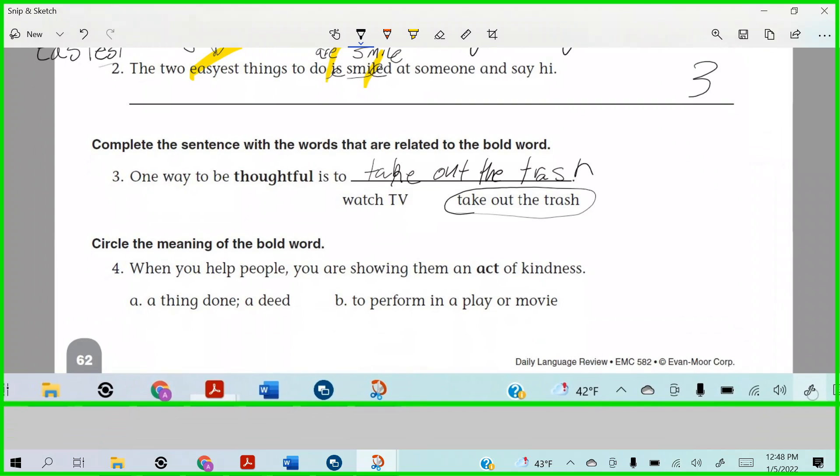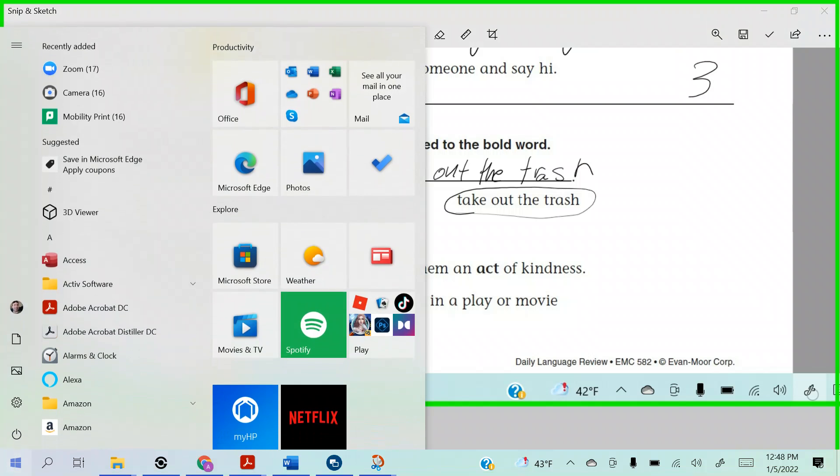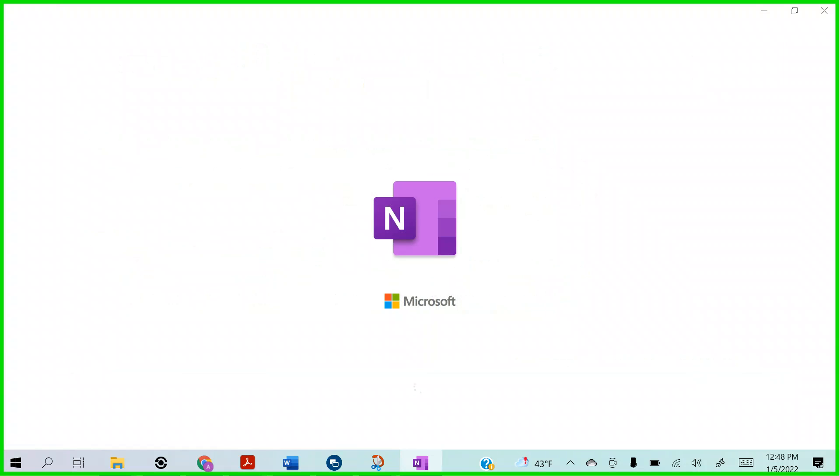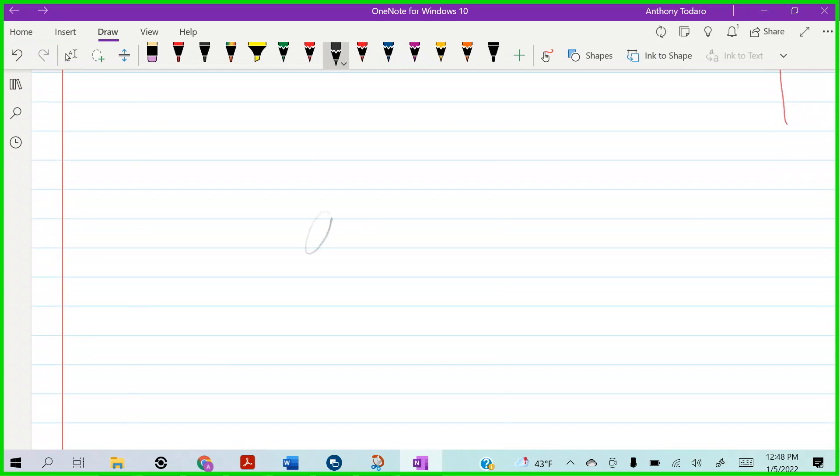Alright, take out the trash. Take out the papers in the, in, in. You ever hear that one? It's an old one from the fifties. Circle the meaning of the bold word. When you help people, you are showing them an act of kindness. Now, if I were simply to put up the word act like this, if I just wrote the word act just like that and I say, hey, tell me the definition of act right now, go. Who's got it? What is it? We don't know because there's two different things. Well, but what are we missing? The things that come before it? Yeah, but what do we call that? What do we call it? What is it?